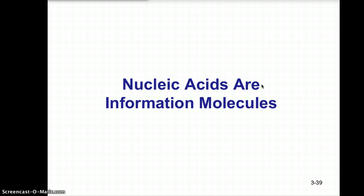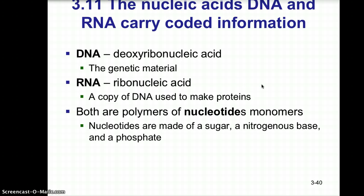Our last group of macromolecules are the nucleic acids, our information molecules. The two nucleic acids to know are DNA (deoxyribonucleic acid), our genetic material, and RNA (ribonucleic acid), a copy of the DNA used to make proteins. Both are polymers of nucleotides — the monomer subunits that come together to form a polynucleotide. Each nucleotide is made up of a five-carbon sugar (ribose or deoxyribose), a nitrogenous base, and a phosphate group.